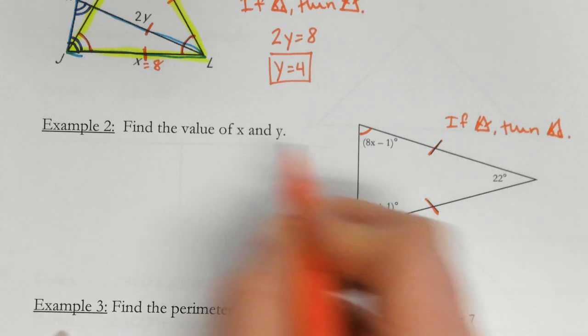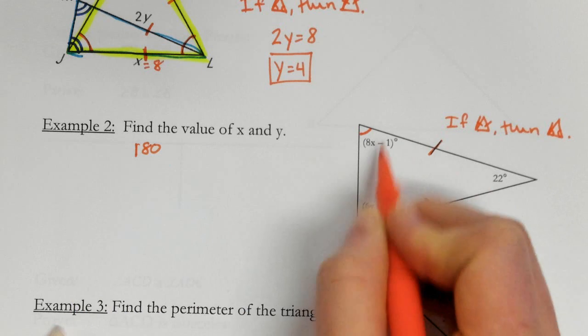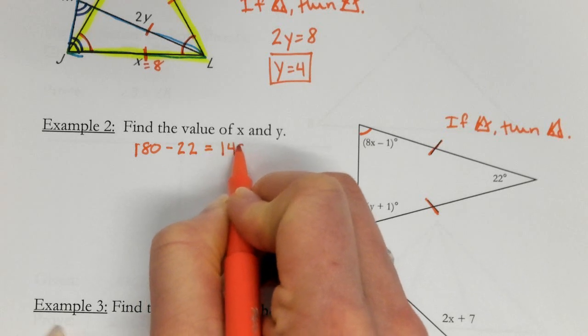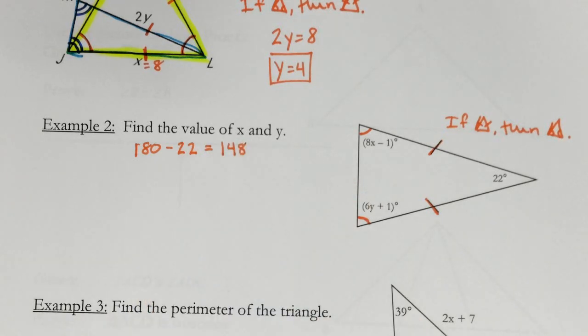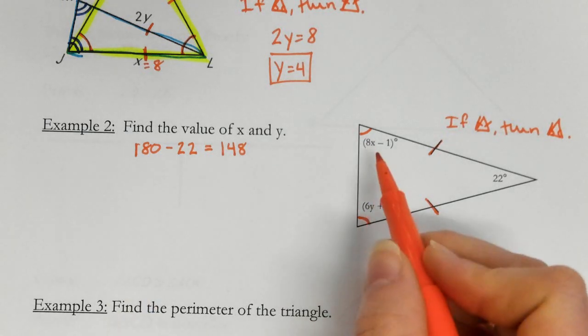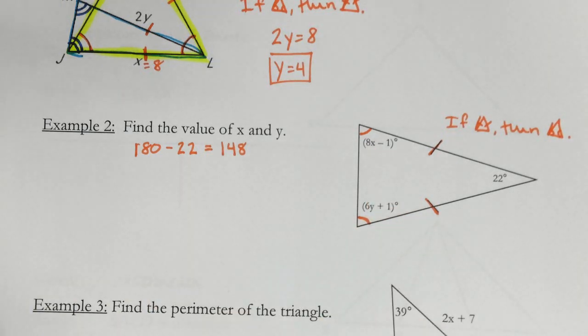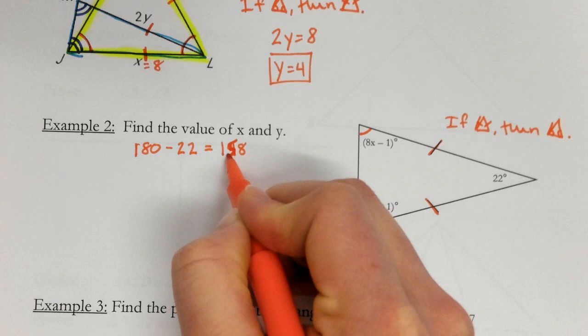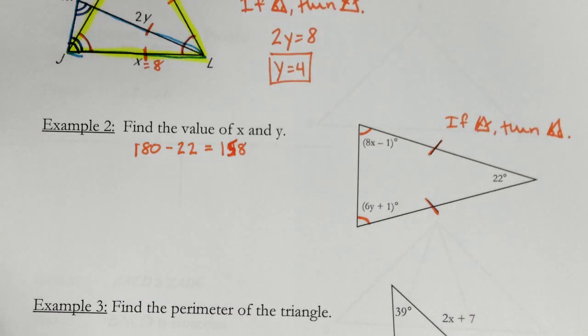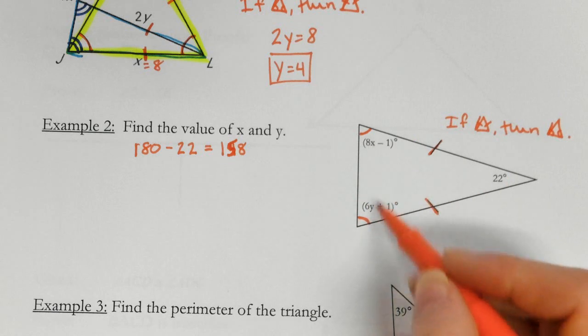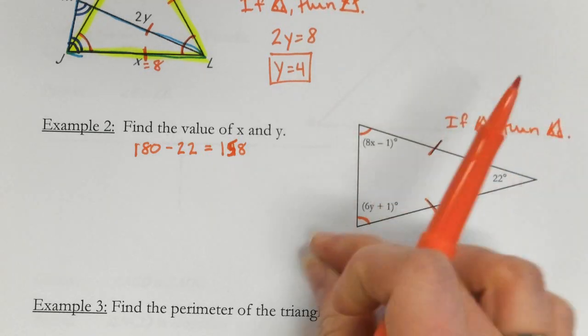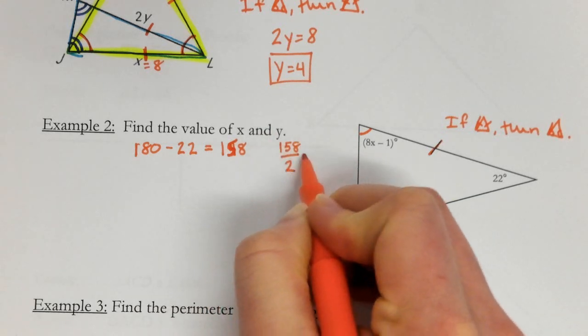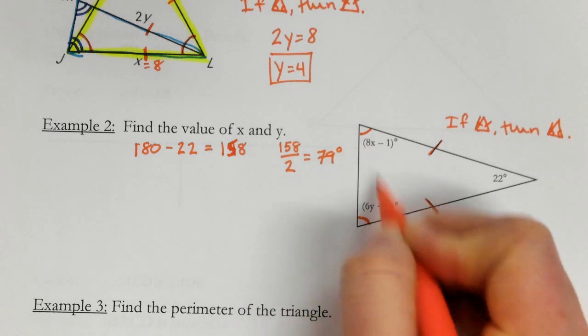But I do have a 22. So, if I have 180 is what they all add up to, and I subtract 22, I get 158. Well, if I know that these two add up to 158, now I take 158 and I'm going to divide by 2 to get what each one of those equals.